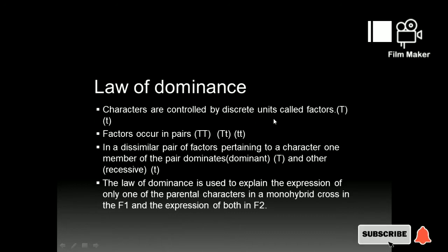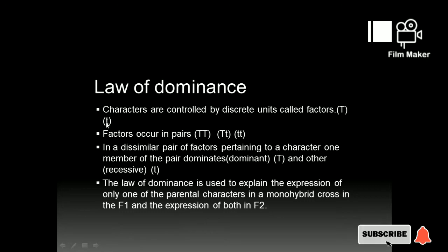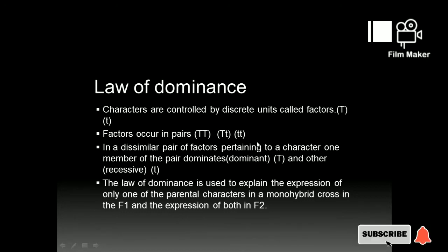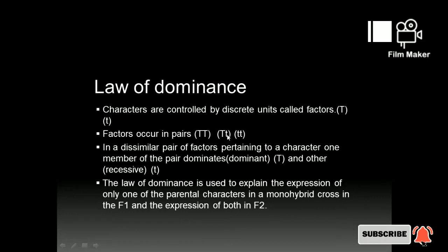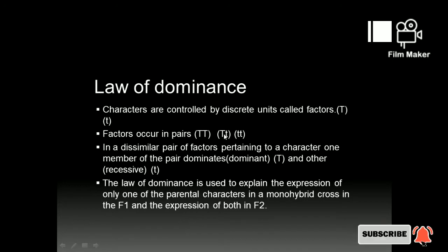The first law states that characters are controlled by discrete units called factors. If you want to cross two plants — a tall plant and a dwarf plant — these characters can be expressed in discrete units. The factors for a tall plant are called capital T and capital T, and for a dwarf plant small t and small t. These factors are found in pairs. In a dissimilar pair of factors, one member dominates and the other is recessive. Capital T and small t — T is dominant, so capital T represents tallness. This is the phenotype called tall plant.